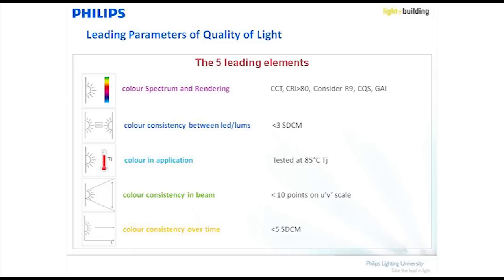The second quantitative measure is the standard MacAdam ellipse — less than three MacAdam ellipses, which we have initiated as a standard. Not everyone may be familiar with MacAdam ellipses, so I'll go into more detail on that later.